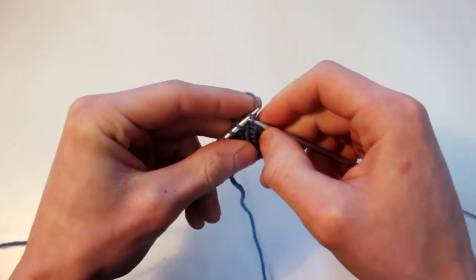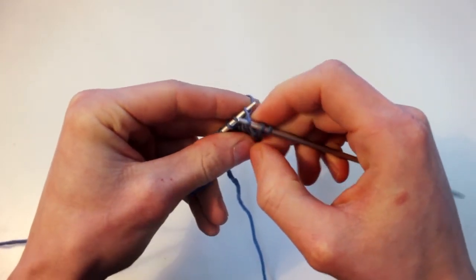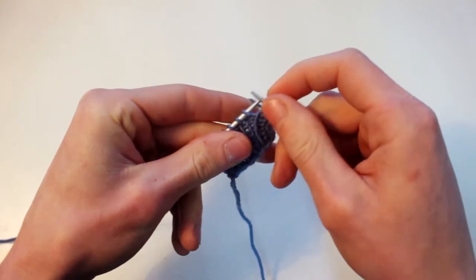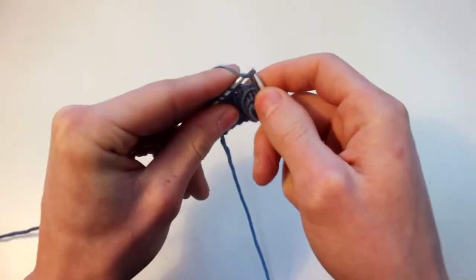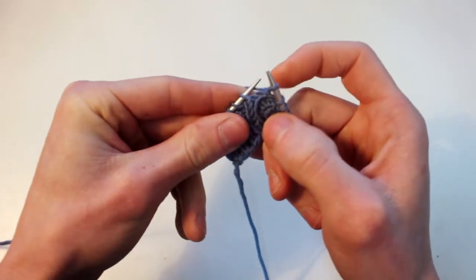So when I work a stitch, allow the yarn to move forward slightly and then when I release the worked stitch I can pull the yarn back to tighten it again. That's the concept of what we're trying to do.